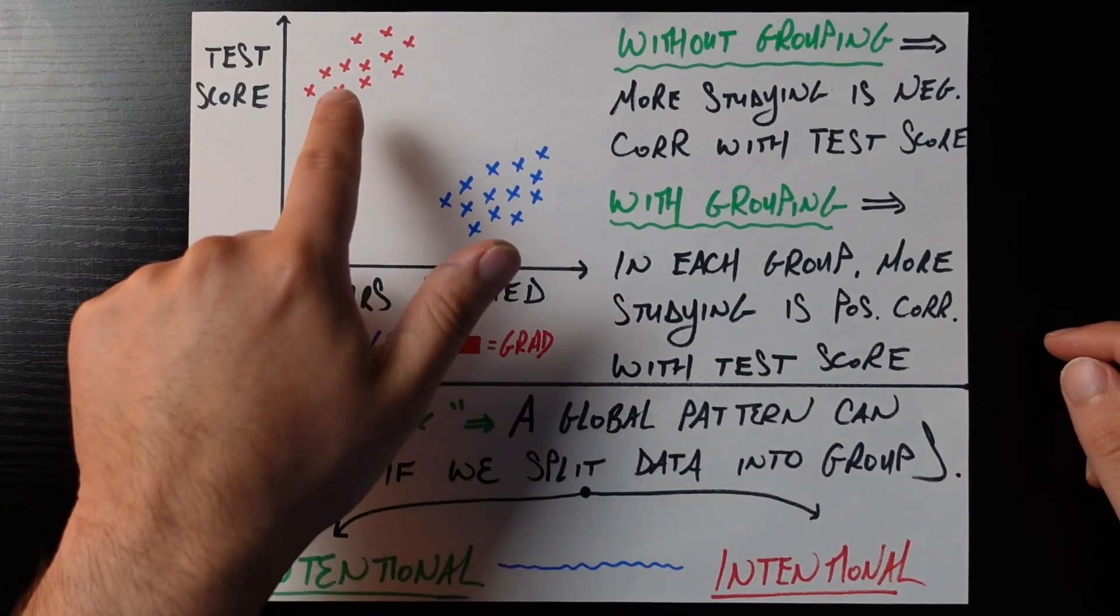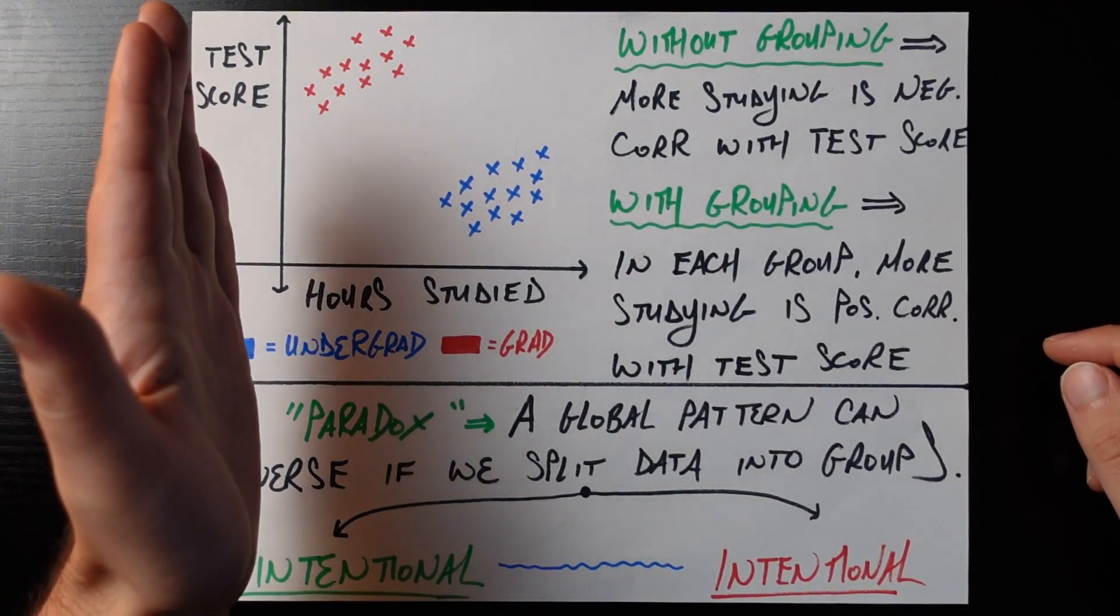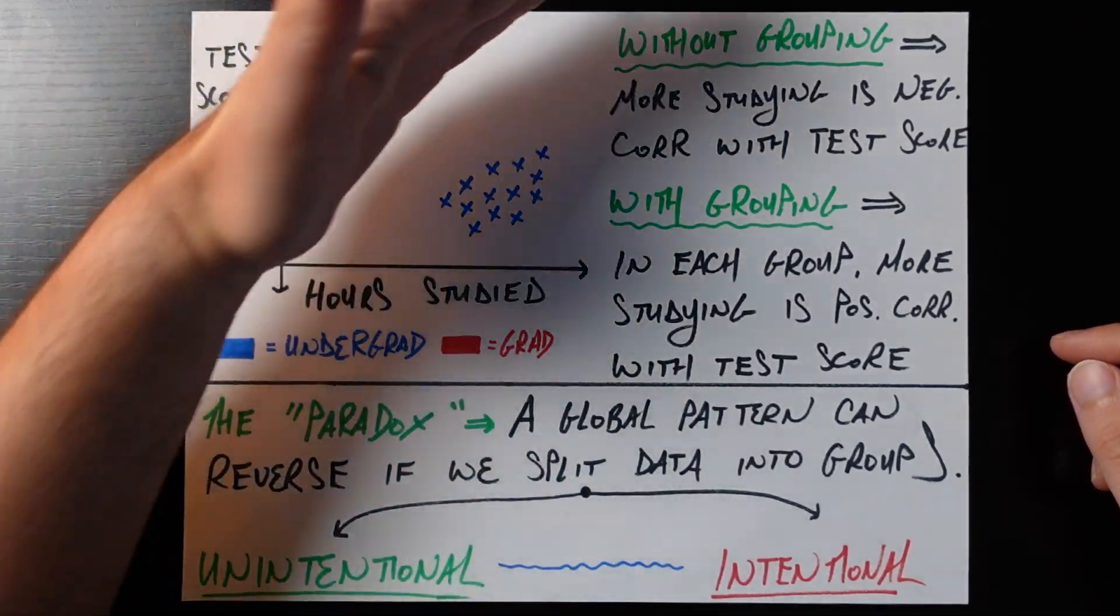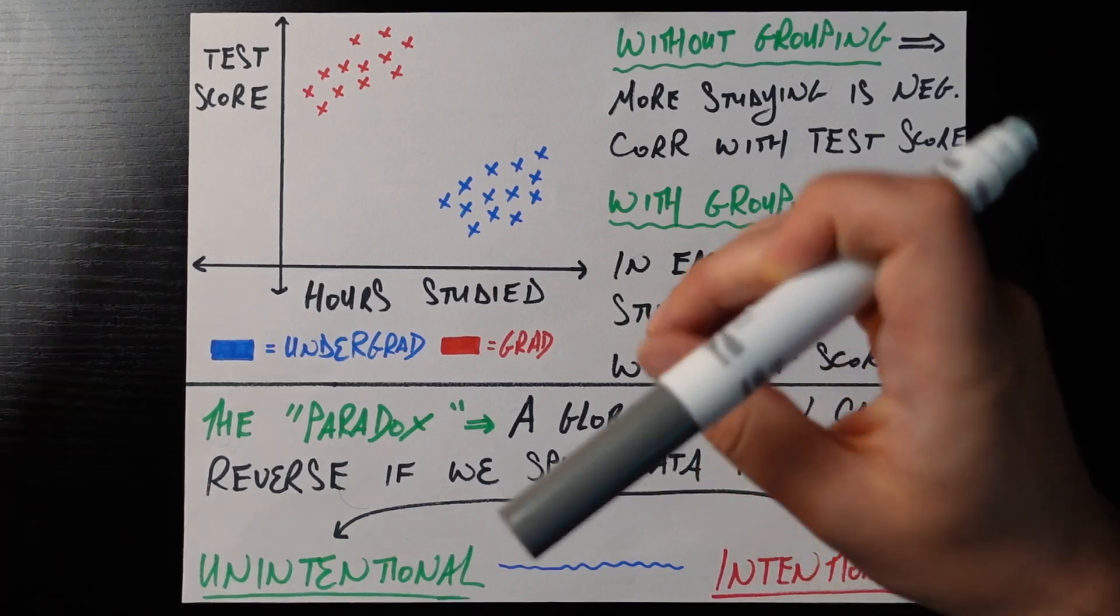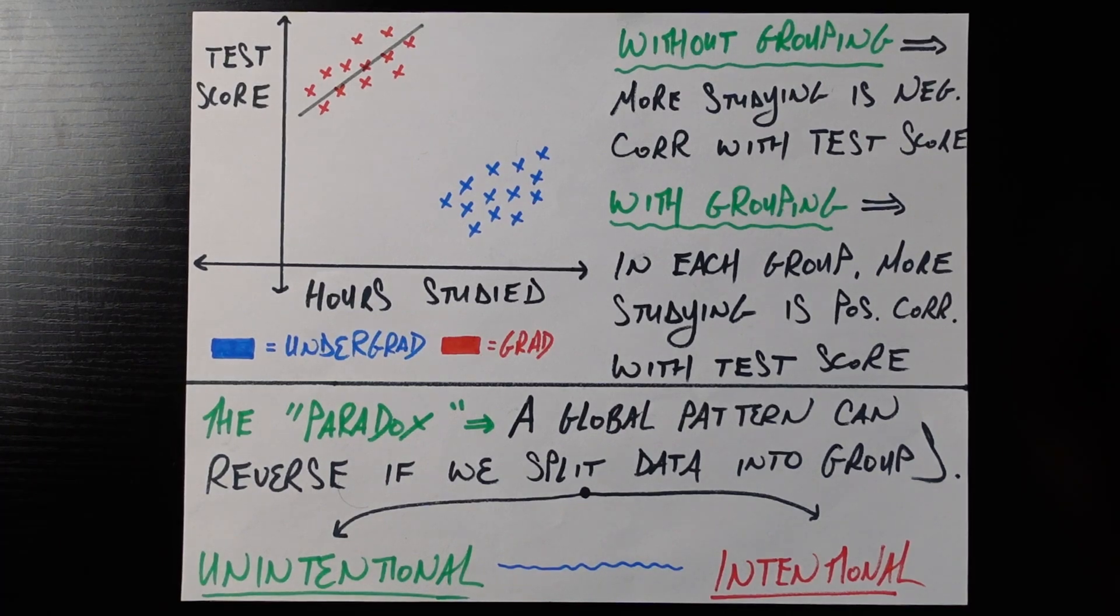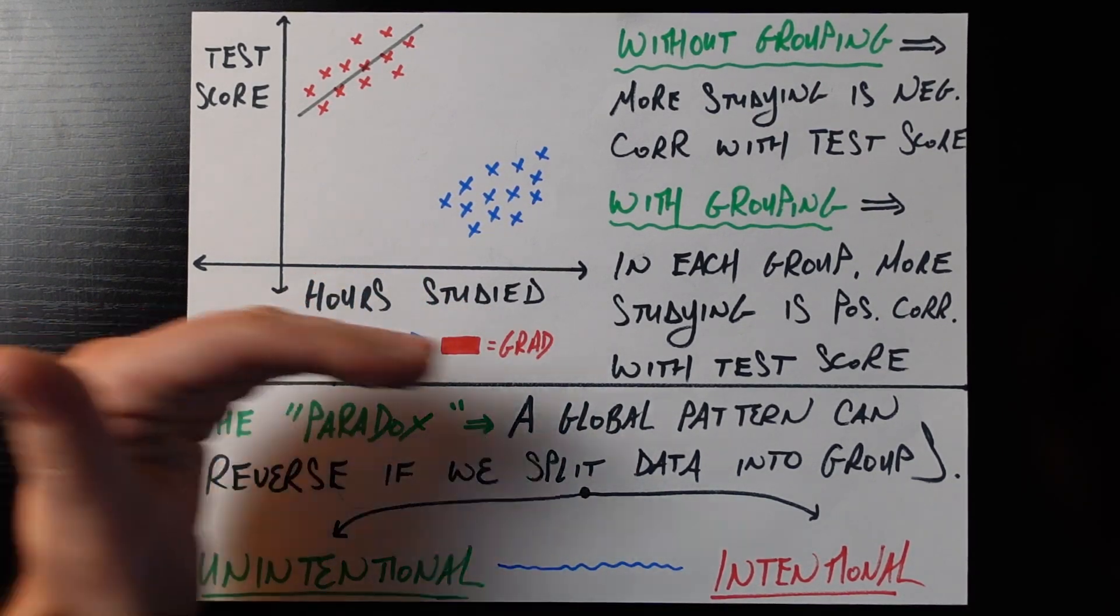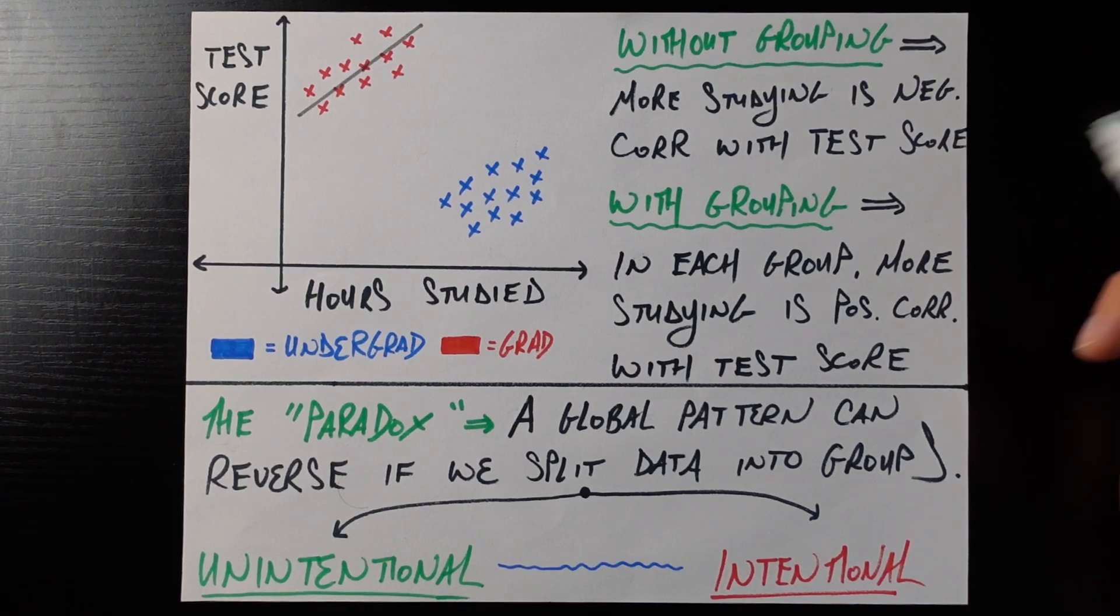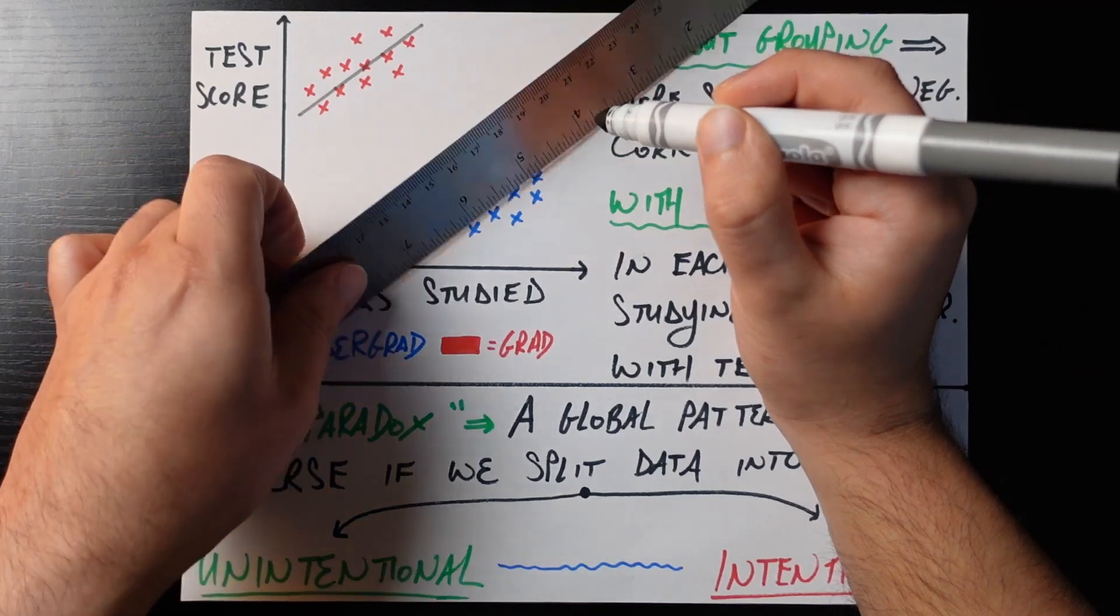Now we find for the graduate students who are these red cluster up here, it does tend that if you study a little bit more, you do get a higher test score. So there is a positive correlation here. So we can just draw a line of best fit through our graduate student cluster here. Good enough. And if we ask the undergraduate students, how much did you study, and we see if they studied more, that does also lead to a positive correlation with test score. So we can draw a pretty good line of best fit right there.